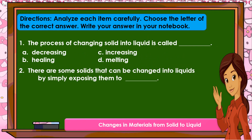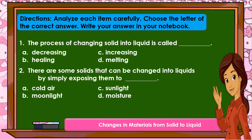Number 2: There are some solids that can be changed into liquids by simply exposing them to — A. Cold air. B. Moonlight. C. Sunlight. D. Moisture.